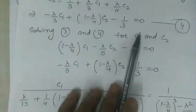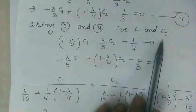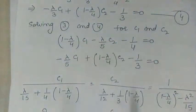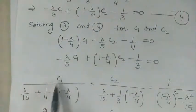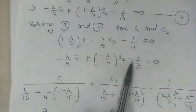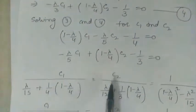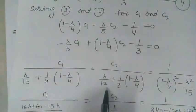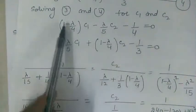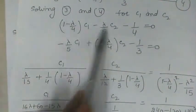To find the solution, we need the values of c₁ and c₂ from the algebraic system formed by equations 3 and 4. Solving these two equations by the cross multiplication method: c₁ is divided by the product of (−λ/5)(−1/3) minus the product of the other two terms, and similarly for c₂ and the denominator term involving (1 − λ/4)².